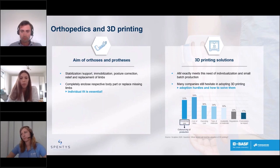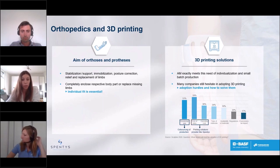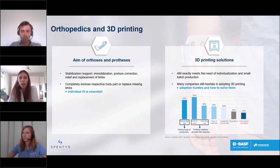To mitigate the knowledge gap, BASF Forward AM offers clients support and the option to outsource production. The next two factors — cited by 59% and 36% of respondents — are linked to the costs of entering the technology and ongoing operating costs. To address this, our partner Spentis also offers a printing service for their clients. With 34% and 30%, the next two barriers relate to the types and availability of 3D printing materials, and this is where BASF is called into action.